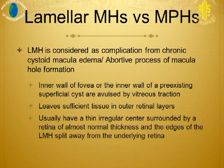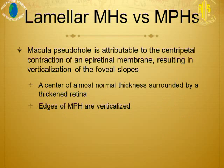The edges of the lamellar macular hole split away from the underlying retina. In macular pseudo-hole, it is attributable to the centripetal contraction of an epiretinal membrane, resulting in steepening of the foveal slopes. A center of almost normal thickness in the pseudo-hole is surrounded by a thickened retina, and the edges of the pseudo-hole are verticalized.